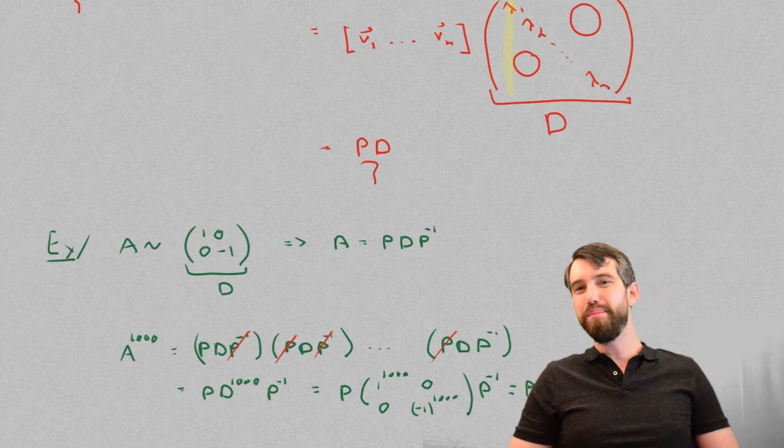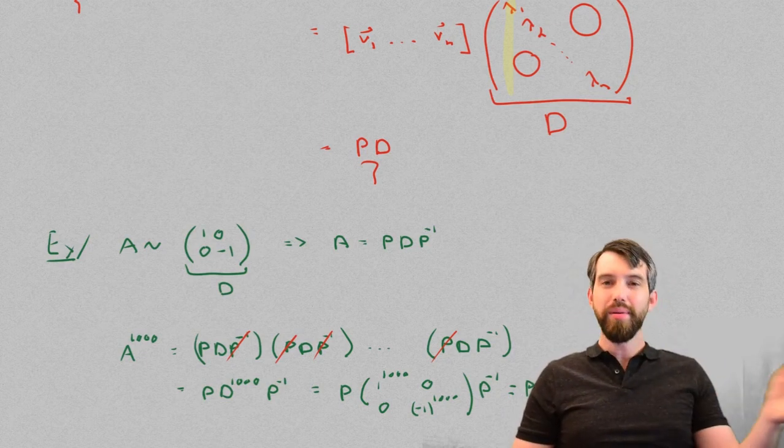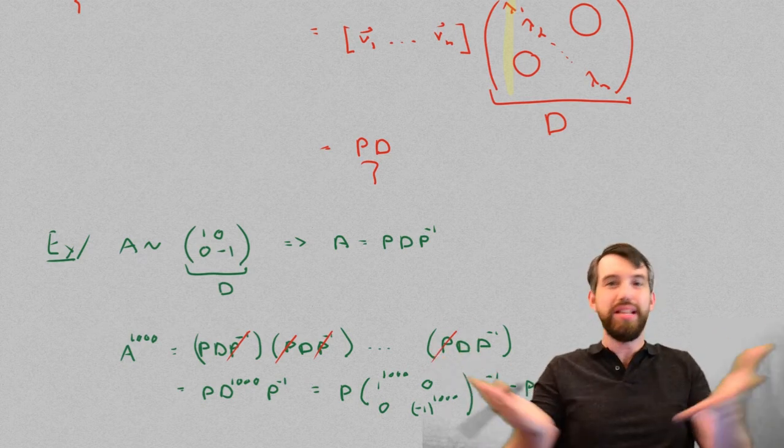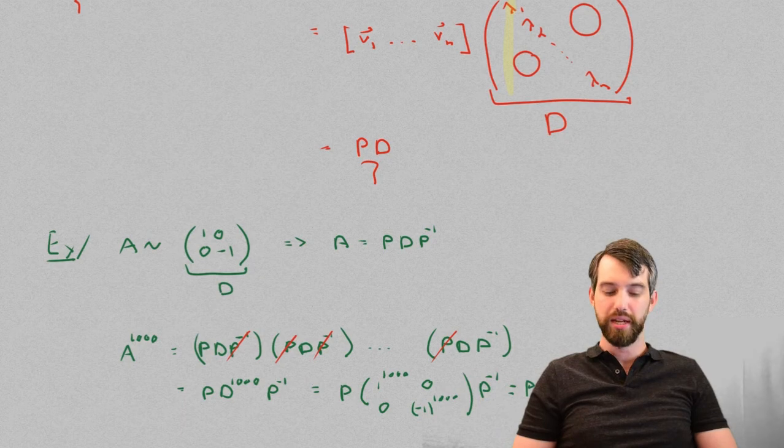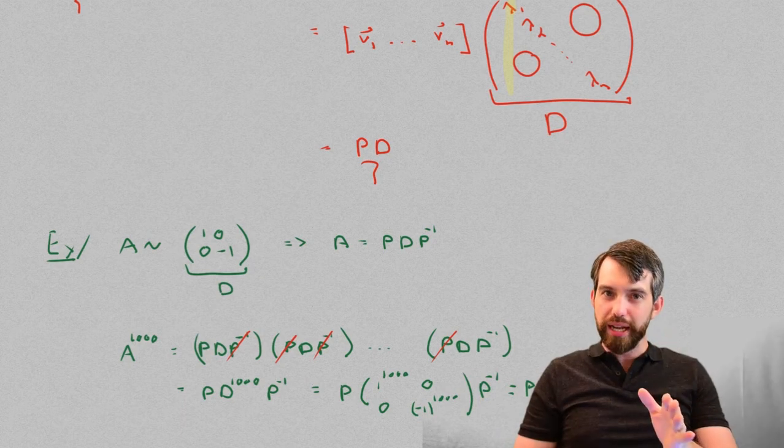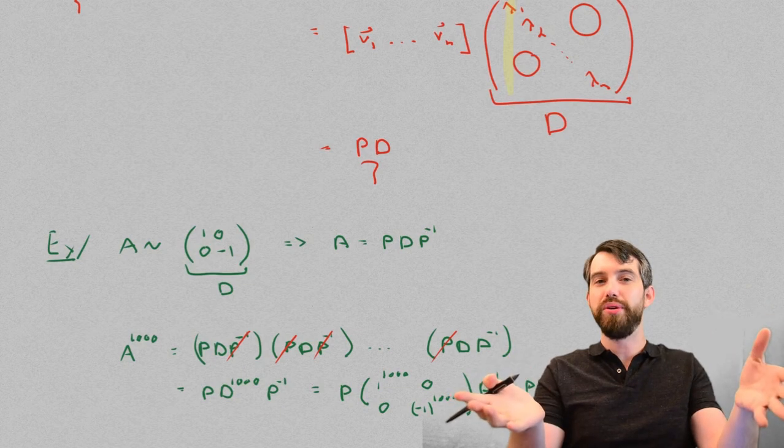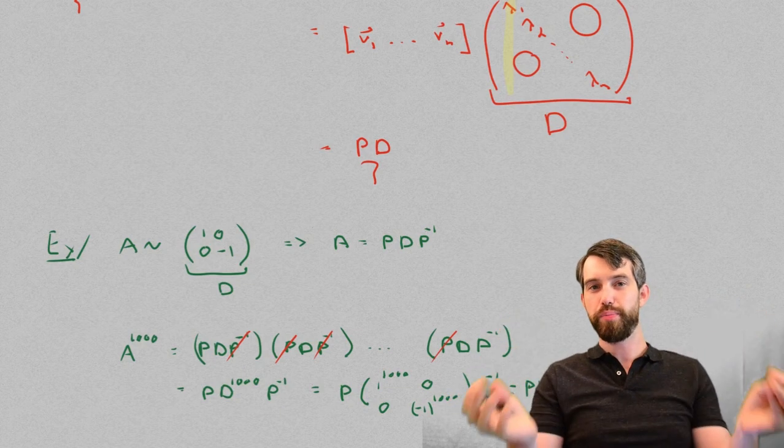And if you had some other number, say it wasn't minus 1, say it was 2, well, you would get P times this diagonal matrix, it would be 2 to 1,000. And that's some big number, we can figure out what that was. But regardless, taking diagonal matrices to very large powers is going to be an easy process.